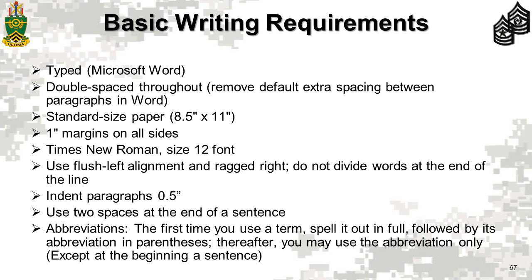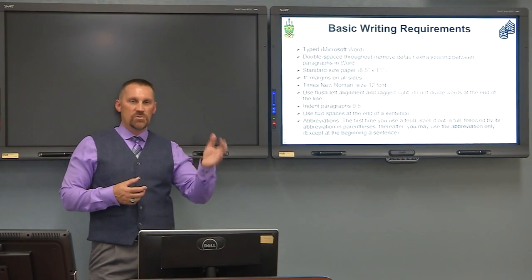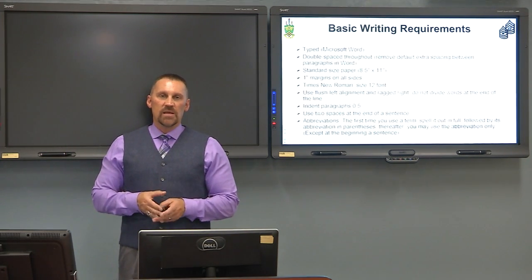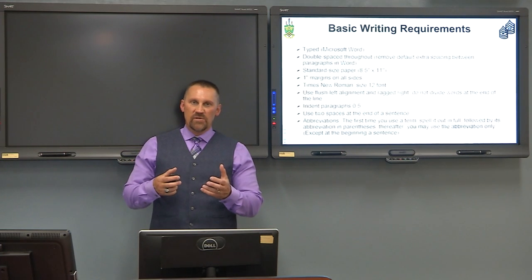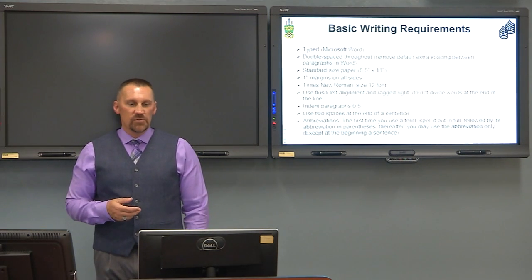All paragraphs will be indented a half inch. We ask you to use two spaces between sentences — that is AR 2550 and APA 6th edition, which meets our Army writing style as well. When it comes to abbreviations, if you're going to use an acronym such as NCOPD, make sure the first time you use it you spell out 'non-commissioned officer professional development,' place NCOPD in parentheses, and then use the acronym thereafter. The only exception is if you're beginning a sentence — you do not want to begin a sentence with an acronym.